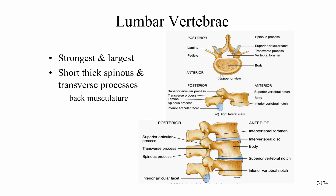The lumbar vertebrae is going to be the strongest and largest. It's going to have short, thick spinous process and transverse process, which allows for the back musculature to be attached. Looking at the parts: we have the body, the vertebral foramen, the transverse process which is a bit shorter, the lamina, the spinous process, the superior and inferior vertebral notch, and the intervertebral foramen when stacked together. There's also an area called the pars interarticularis.